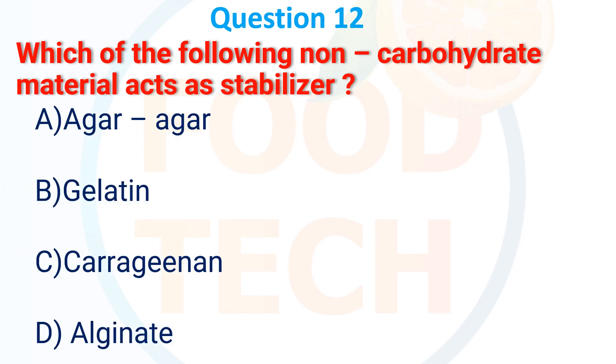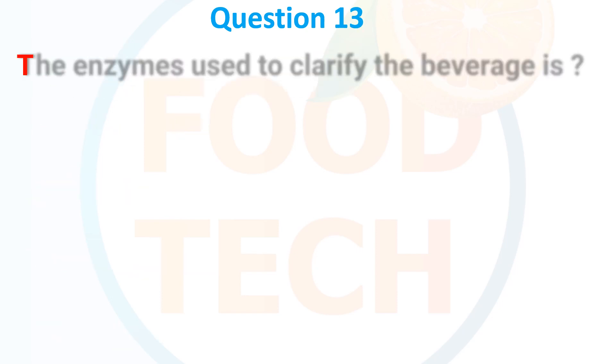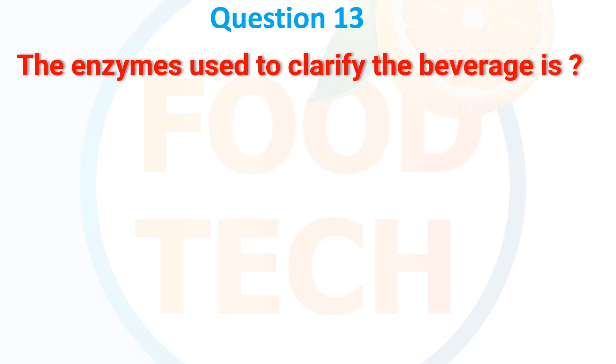Which of the following non-carbohydrate materials act as a stabilizer? A. Agar, B. Gelatin, C. Carrageenan, D. Alginate. The answer is B. Gelatin.